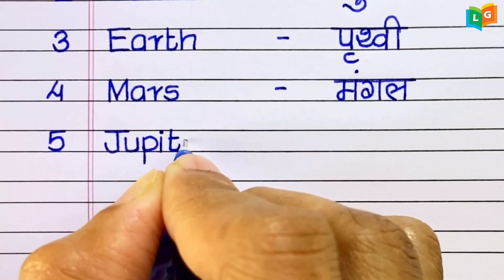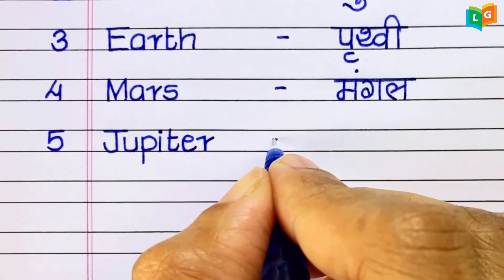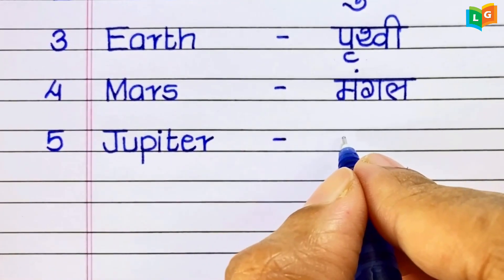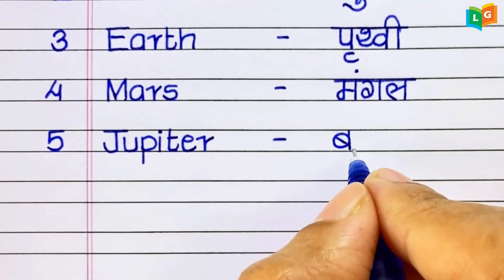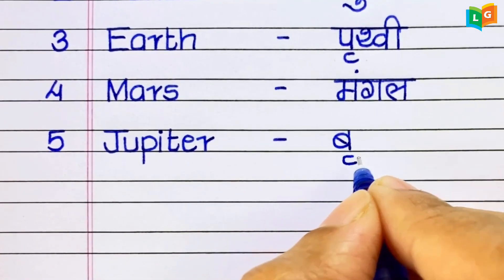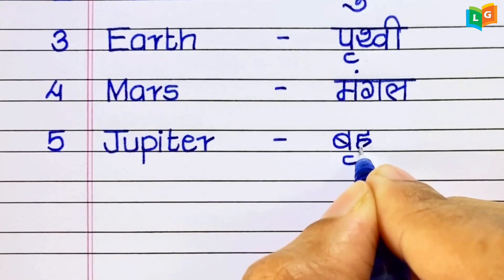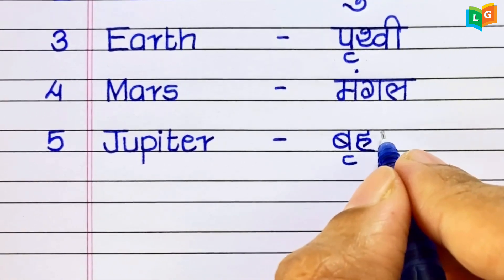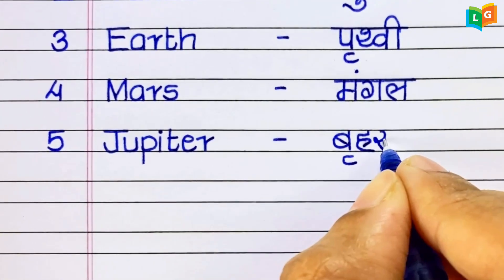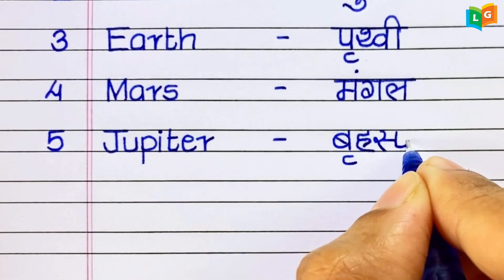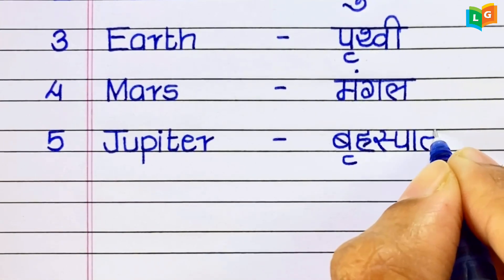Next, J-U-P-I-T-E-R, Jupiter. Jupiter means Brihaspati Graha.